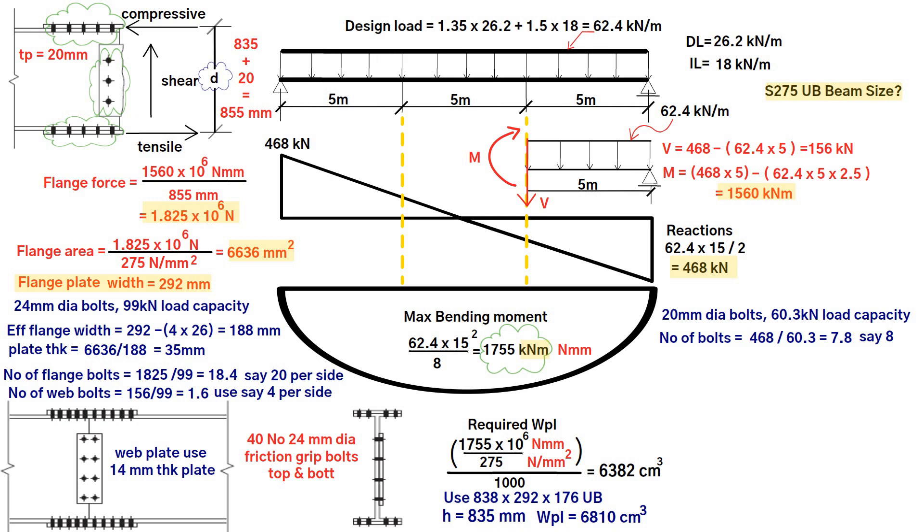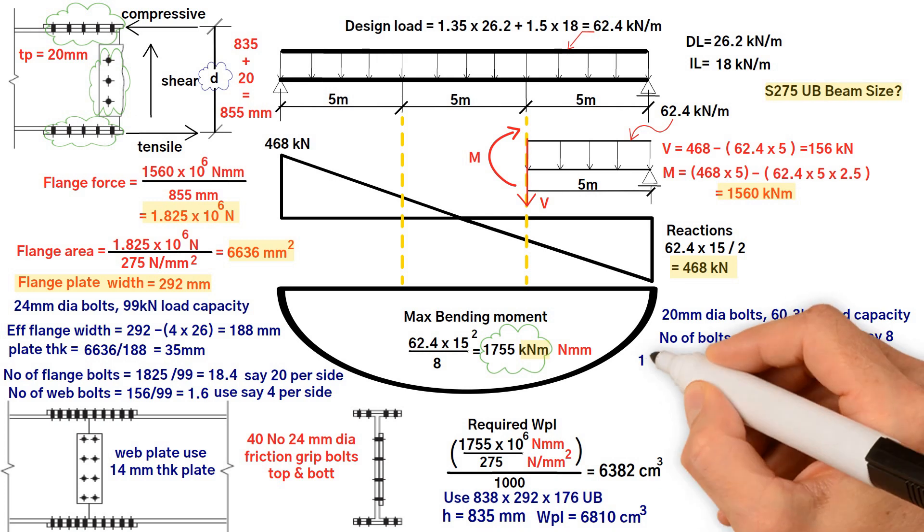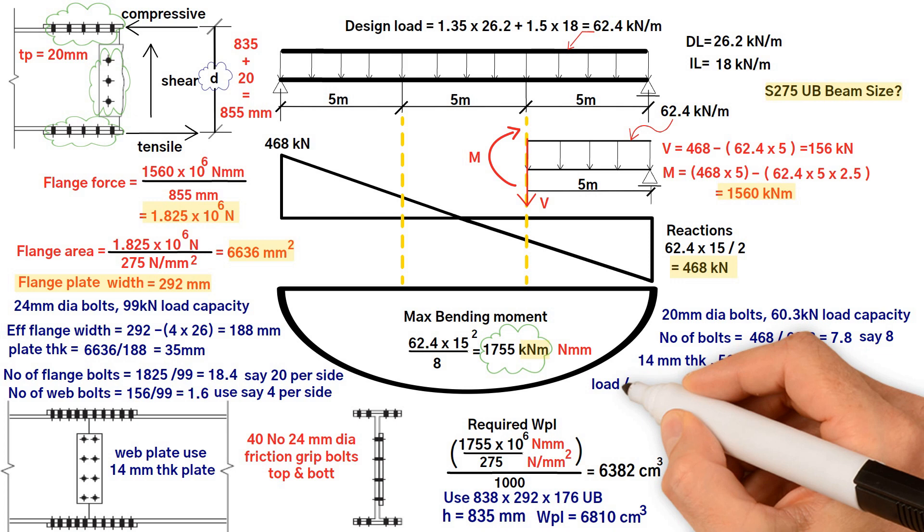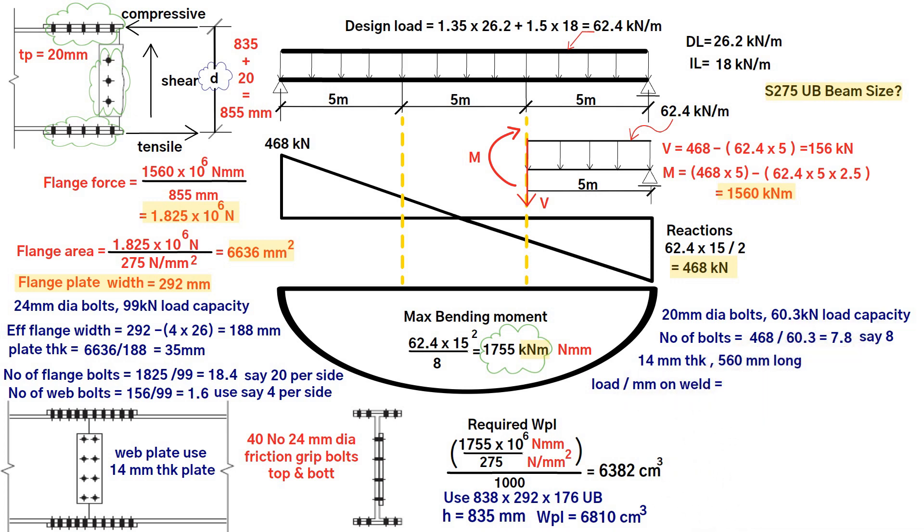Consider using an end plate which is of similar thickness to the beam web, for instance 14 millimeters. Now if the plate is 560 millimeters long, the load per millimeter on weld equals the maximum shear at the end plate 468 kilonewton divided by the length plate 560 millimeters